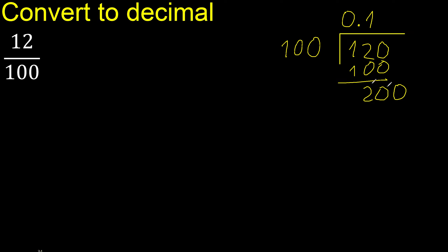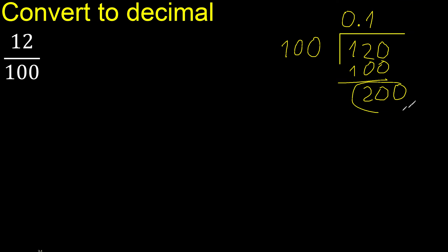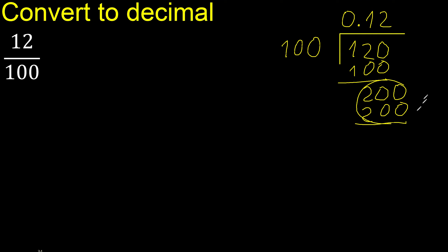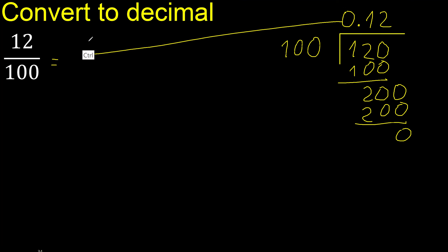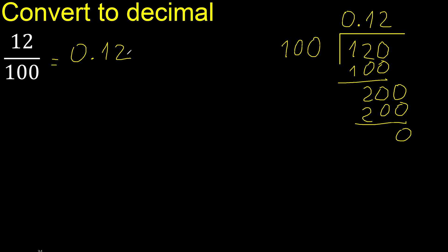Place the decimal point here. 200 — 100 multiplied by which number is nearest to 200: 2 is 200, not greater. Subtract 0. Therefore finish.